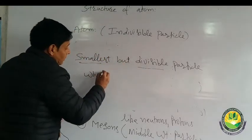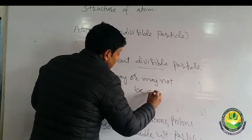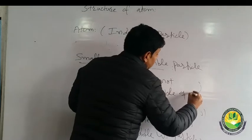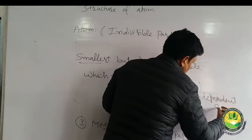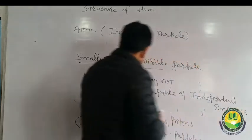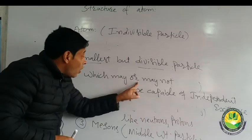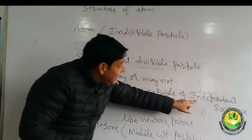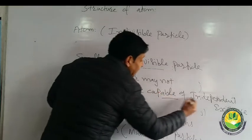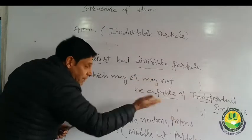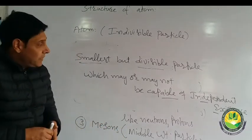So atom is the smallest but divisible particle of matter, which may or may not be capable of independent existence. Two things: atom may be capable of independent existence, or atom may not be capable of independent existence.